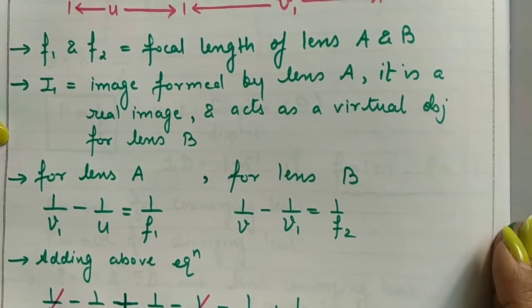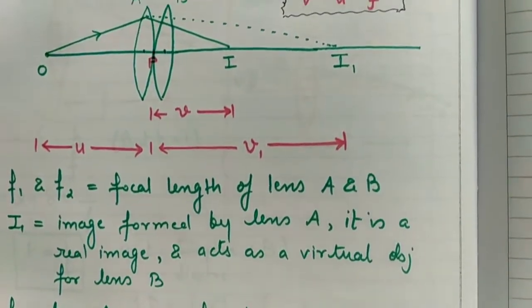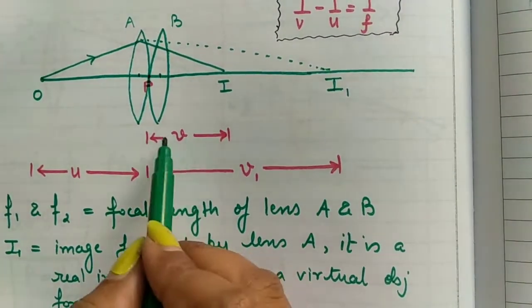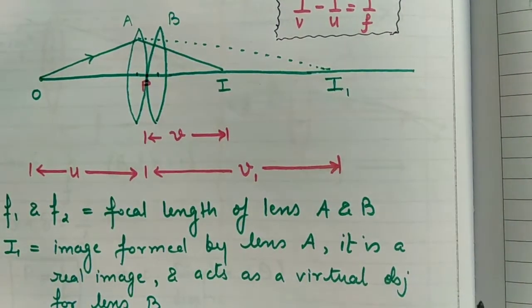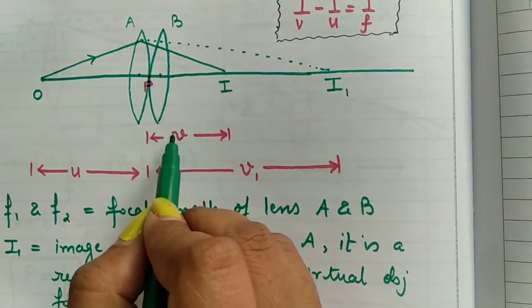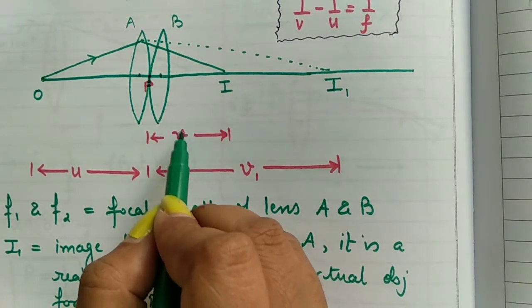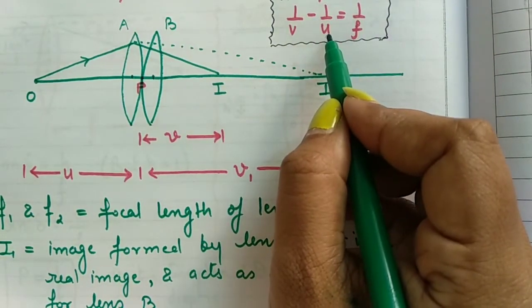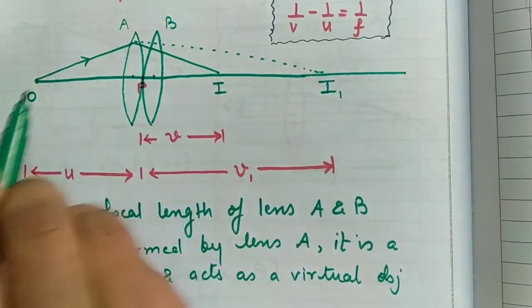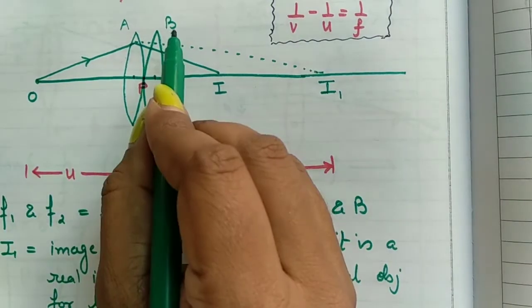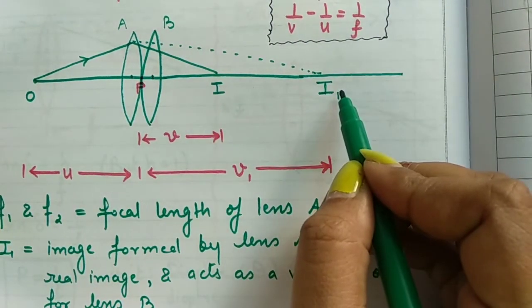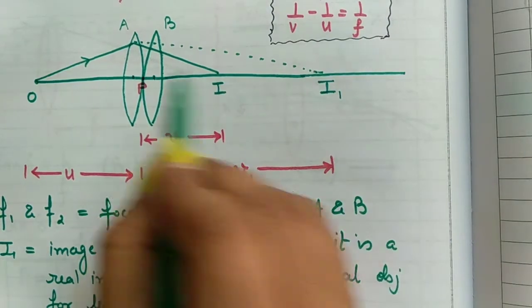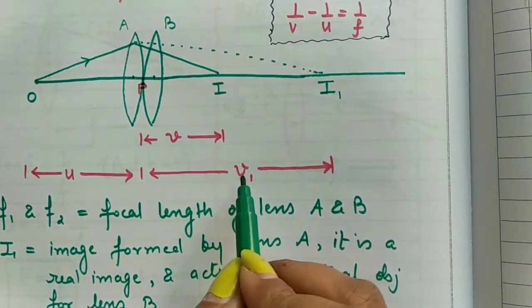Now I'll write the same equation for lens B. Again, my formula is 1 upon image distance minus 1 upon object distance equals 1 upon focal length. For lens B, image distance is V. Just see from the figure, this is the image distance for lens B. So instead of image distance, I will write V. Minus I have to write 1 upon object distance. But for lens B, this was not the object. For lens B, object is I1. So I1's distance from lens B is V1.